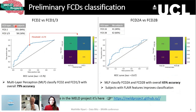Finally, we also tried to differentiate FCD2A from FCD2B, but only on patients that have a FLAIR image, as we showed that this contrast plays an important role in the differentiation of FCD2B. We found that FCD2A and FCD2B were classified with 65% accuracy.